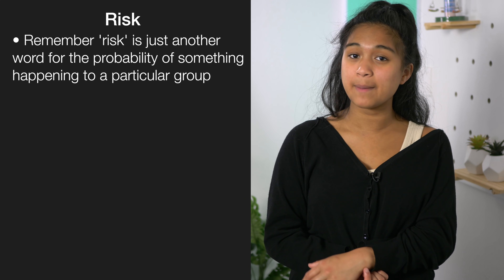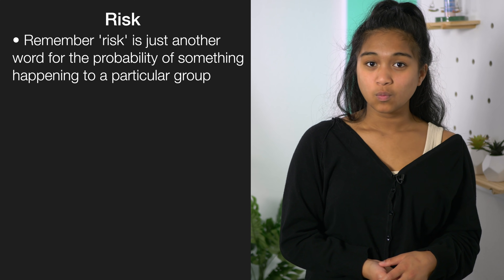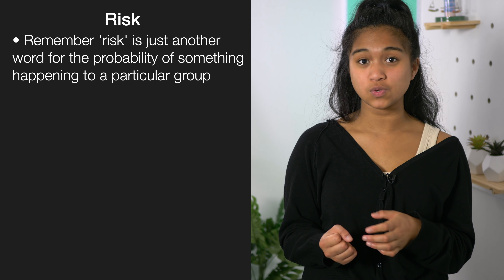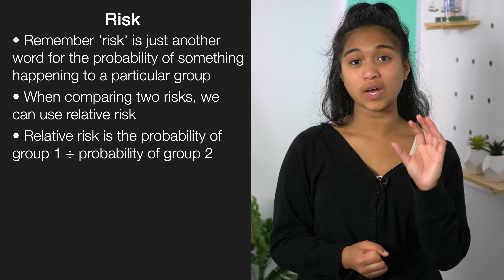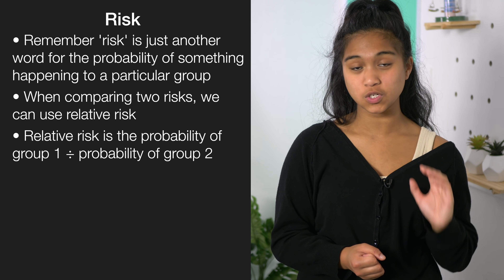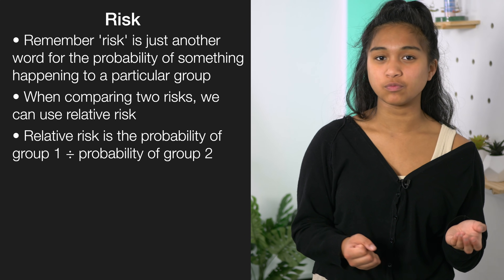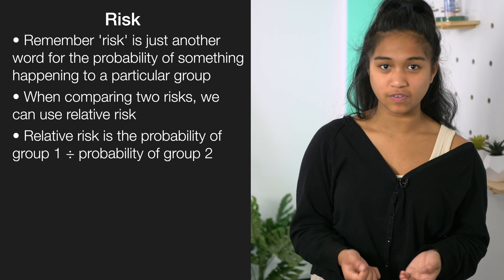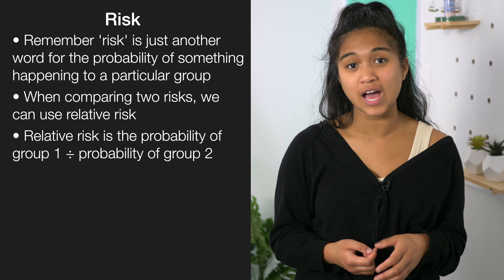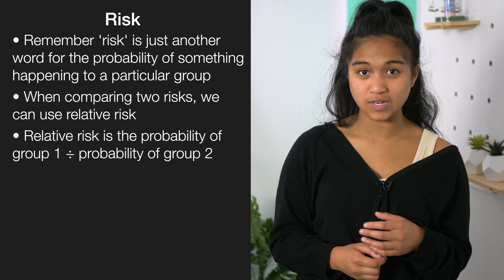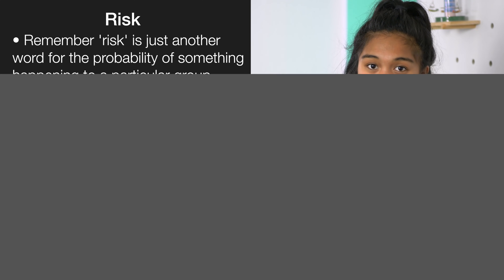Like in level 2, tables are often used in risk calculations. Remember, risk is just another word for the probability of something happening to a particular group. When comparing two risks you can use relative risk, which is the probability of group 1 divided by the probability of group 2. A relative risk of 2.5 means group 1 is 2.5 times more likely to experience the event than group 2.